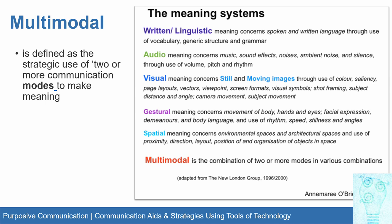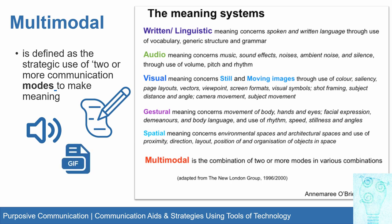Visual meaning concerns still and moving images — still images are pictures that don't move, and moving images you can see in movies or GIFs — through the use of color, saliency, page layouts, vectors, viewpoint, screen formats, visual symbols, shot framing, subject distance and angle, and camera movement.